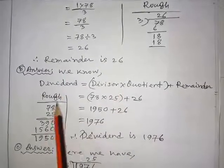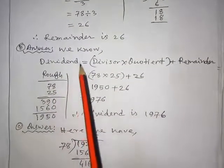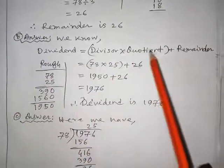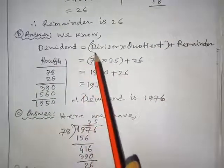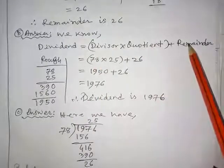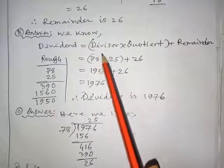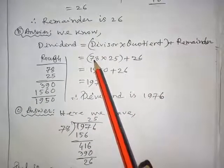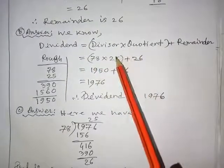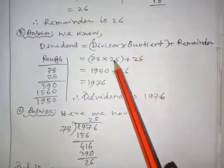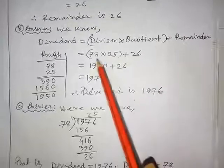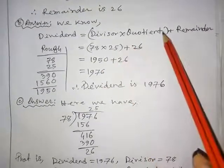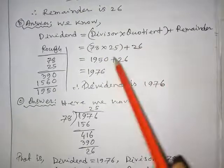Let us start problem B. We know this formula from the division chapter: dividend equals divisor multiplied by quotient plus remainder. The value of the divisor is 78, quotient is 25, and remainder is 26 from part A. If we put all the values to this formula, then we get these results.